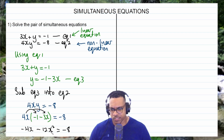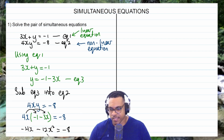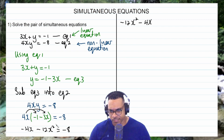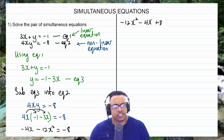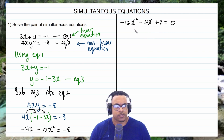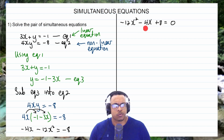Looking at this equation, I can see a term in x squared, a term in x, and a constant — so this is a quadratic equation. Writing it in standard form: negative 12x squared minus 4x plus 8 equals 0, after transferring negative 8 across the equal sign (changing its sign to positive 8). Now I have a quadratic to solve. You can use factorization, completing the square, or the quadratic formula. I'll use the quadratic formula.